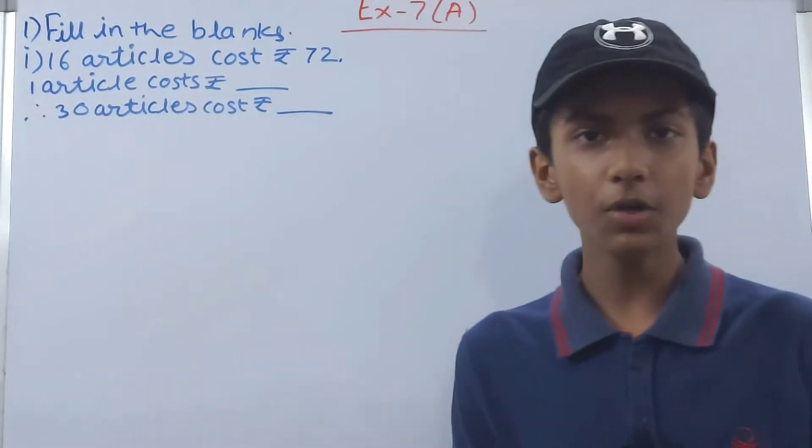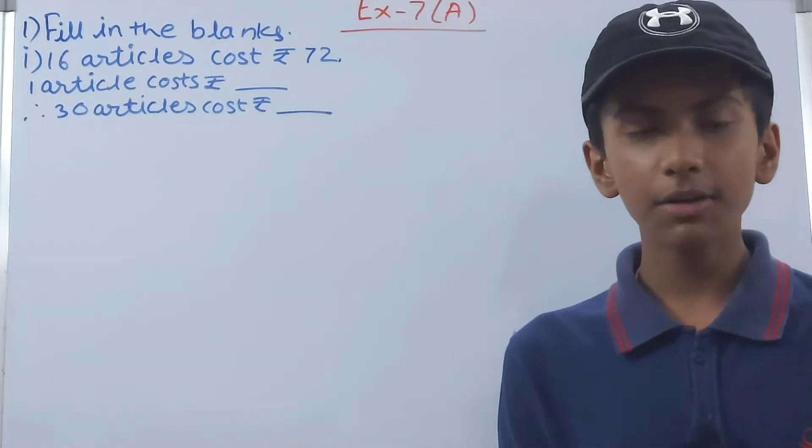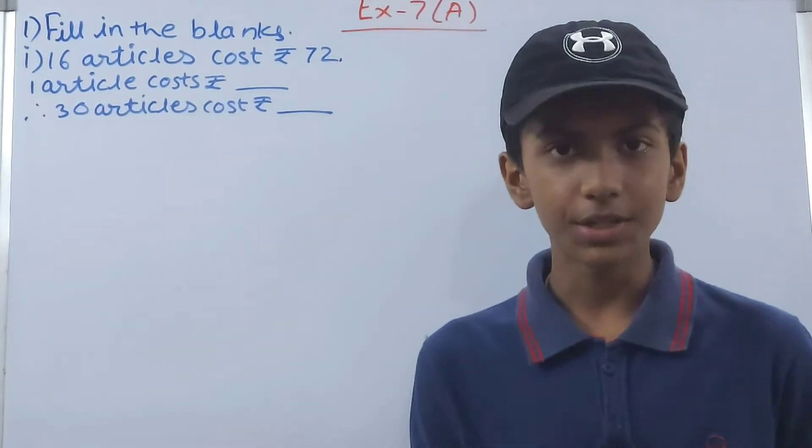In direct variation we always do division, and in the indirect variation we always do multiplication. Let's keep this in mind.